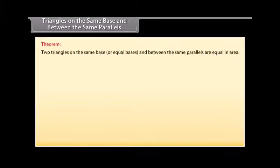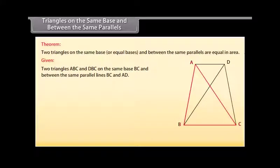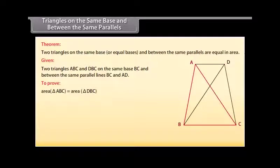Triangles on the same base and between the same parallels. Theorem: Triangles on the same base or equal bases and between the same parallels are equal in area. Given: two triangles ABC and DBC on the same base BC and between the same parallel lines BC and AD. To prove: area of triangle ABC is equal to area of triangle DBC.